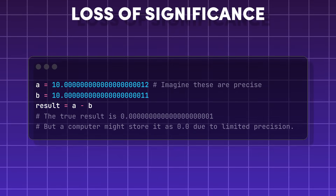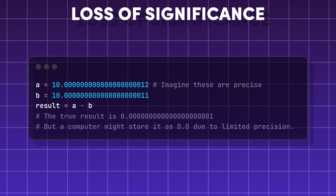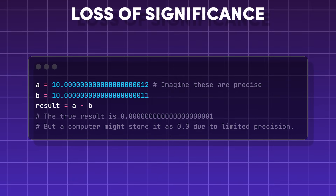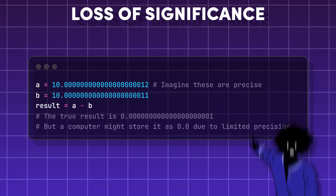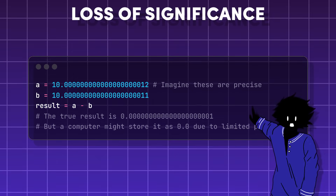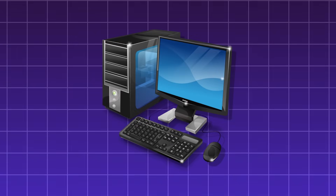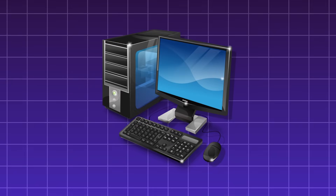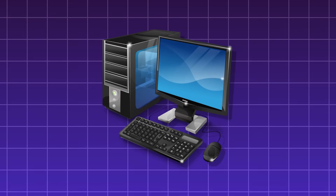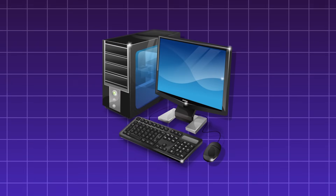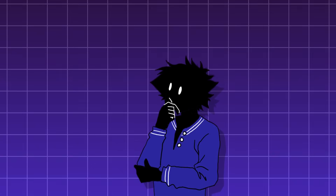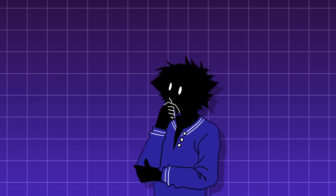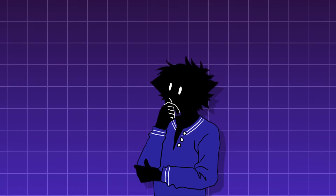Loss of significance. This happens when you subtract two nearly equal numbers, but the answer has fewer significant figures than necessary, therefore amplifying any rounding errors. Arithmetic and calculation errors highlight the fact that computers are machines with limitations, and also that an answer can be technically correct but wrong at the same time.